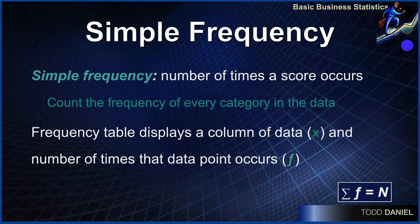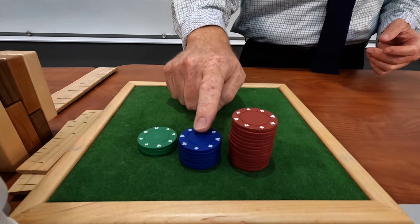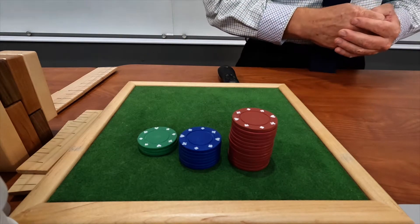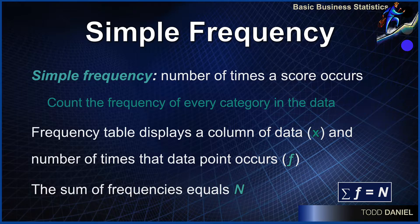We would put our frequencies into a table. Our first column would be X — red, blue, and green. Then, under a category for either F or count, we would see the simple frequency of how many times each score occurs: 14 red, 7 blue, 3 green. Add up all of the simple frequencies and you get the total number in the data set, which we represent as the sample size, N.